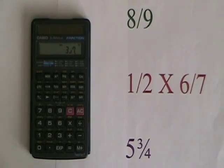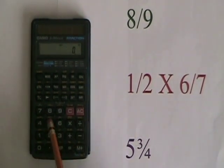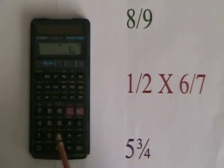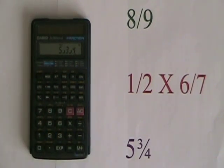If we need to enter a mixed number, like 5 and 3 quarters, we press 5, ABC, 3, ABC again, 4. And this is what a mixed number looks like in this calculator.